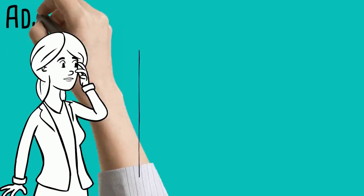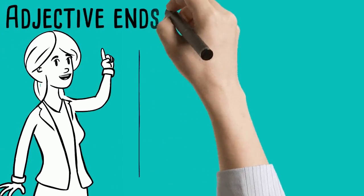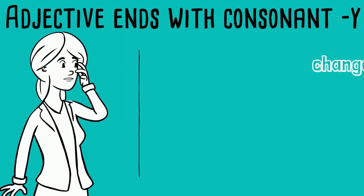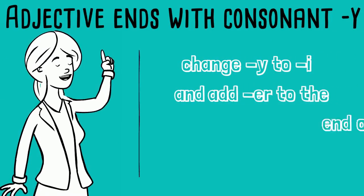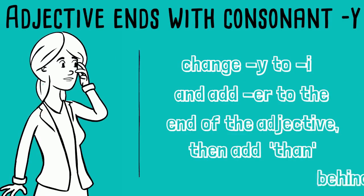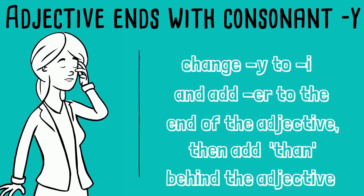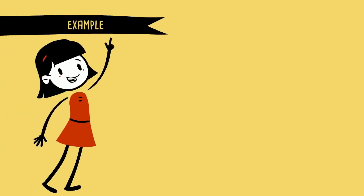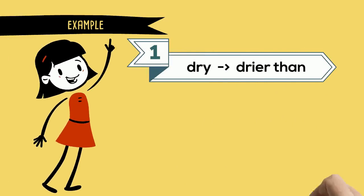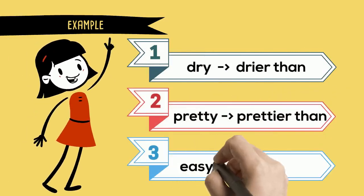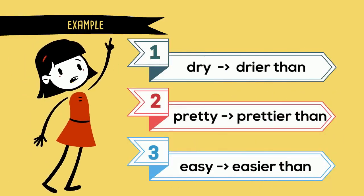Rule number three: for adjectives ending with consonant + y, we change 'y' to 'i' and add 'er' to the end of the adjective, then add 'than' behind the adjective. For example: dry → drier than, pretty → prettier than, easy → easier than.